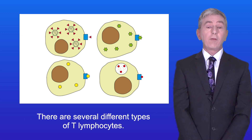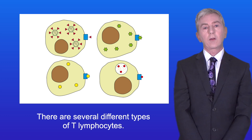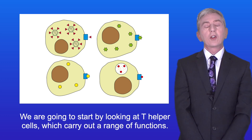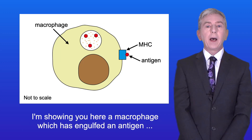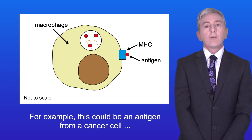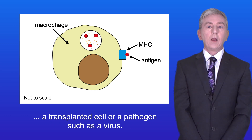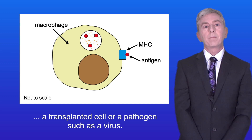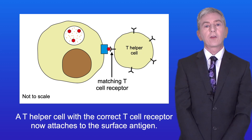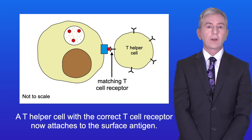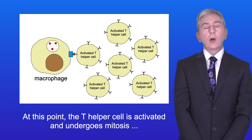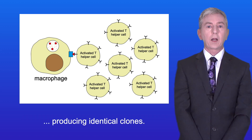There are several different types of T lymphocytes. We're going to start by looking at T helper cells, which carry out a range of functions. Here is a macrophage which has engulfed an antigen and presented it on the cell surface — for example, an antigen from a cancer cell, a transplanted cell, or a pathogen such as a virus. A T helper cell with the correct T cell receptor attaches to the surface antigen and is activated, then undergoes mitosis producing identical clones.